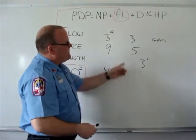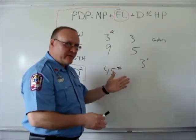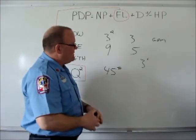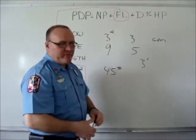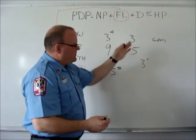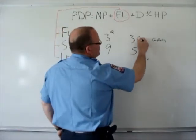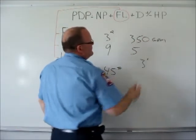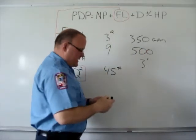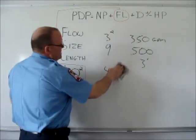If I have a gallons per minute flow that is not a nice round number, like 300, 400, or 200, but it was an in-between number, you could also use this method. And then we'll do an example here with 350 gallons a minute, and we use the same length of hose and then the same size, of course.